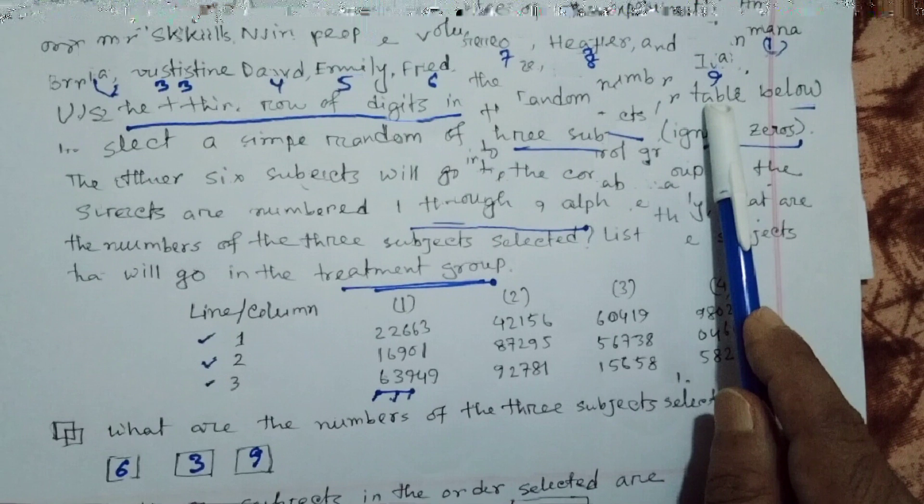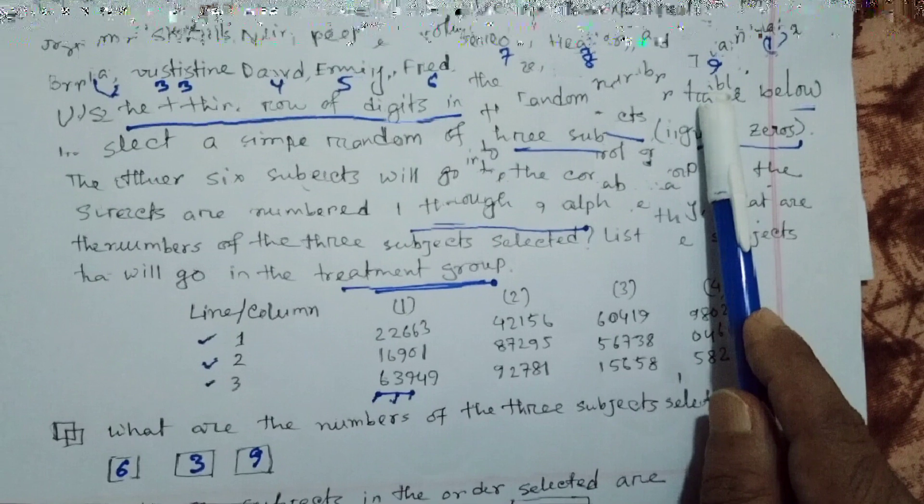Always remember, you should follow the instruction: third row of the digits of a random number table.